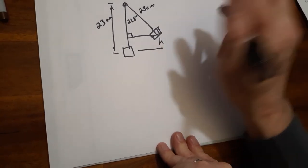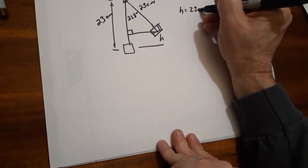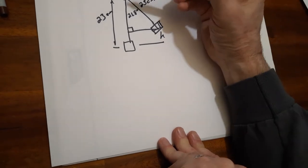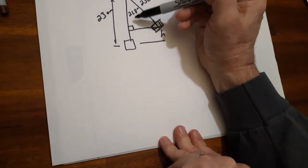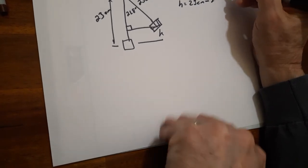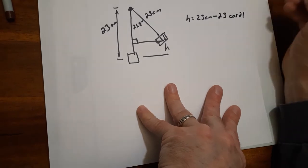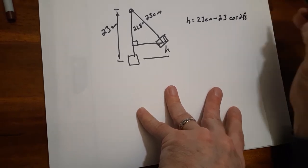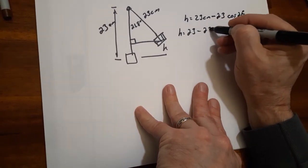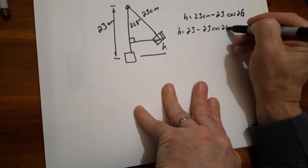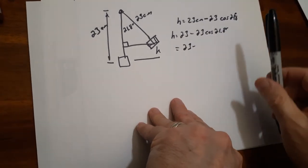So it looks like my H is going to be 23 centimeters minus... let's see, I got a hypotenuse and adjacent side so I guess I need a cosine. Okay, so that gives me 23 minus...